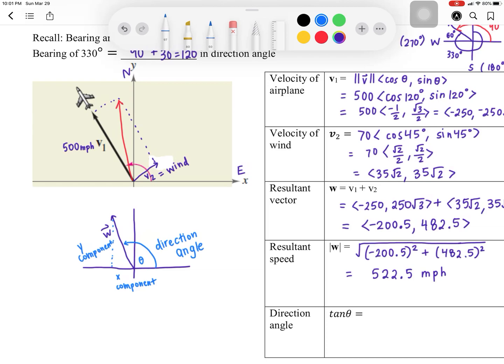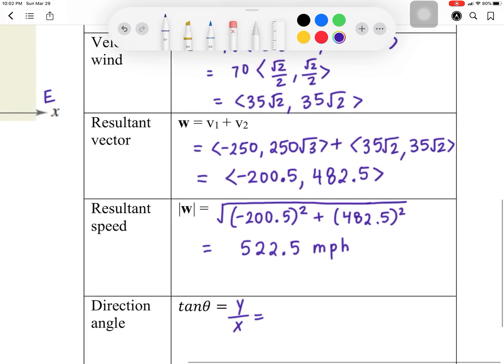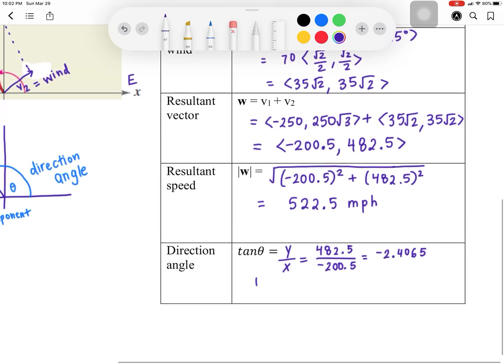So tangent theta is going to be equal to the y-component over the x-component. And your vector was negative 200.5 and 482.5. That makes the 482.5 your y-component and the negative 200.5 your x-component. If you simplify that, you should get around 2.4065. So tangent of theta is equal to negative 2.4065.